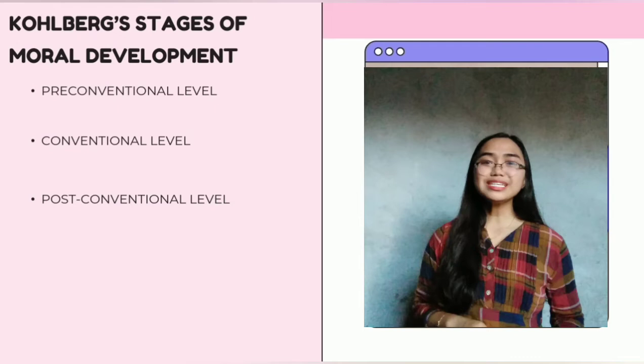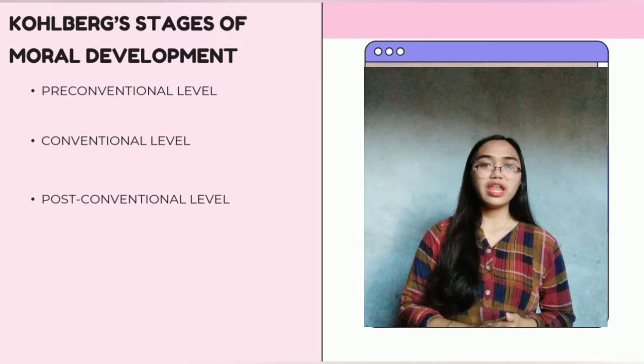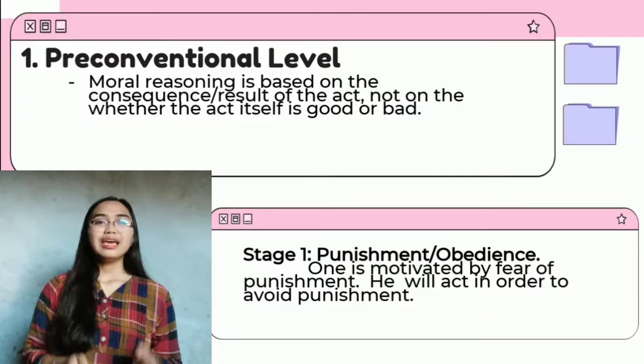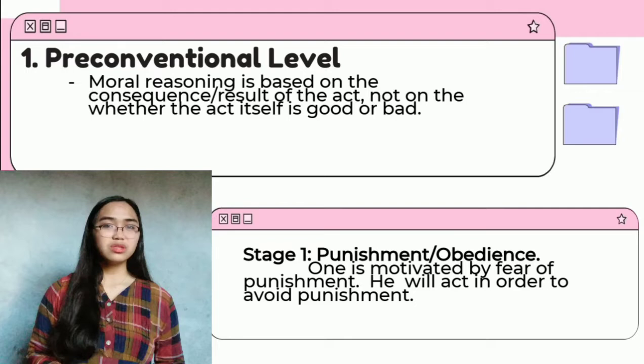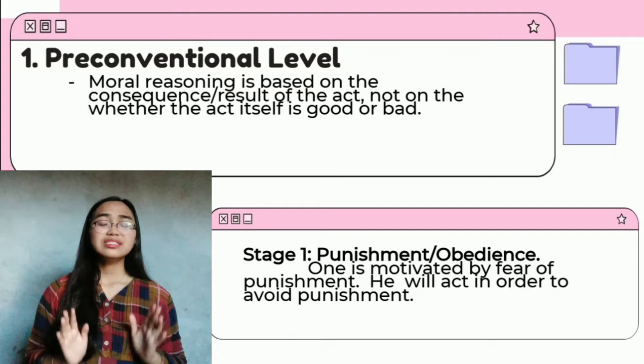As we can see, the theory is divided into three levels: the pre-conventional level, conventional level, and post-conventional level. In the pre-conventional level, the moral reasoning is based on the consequence or result of the act, not on whether the act itself is good or bad. It is characterized by the child's evaluation of actions in terms of direct consequences.